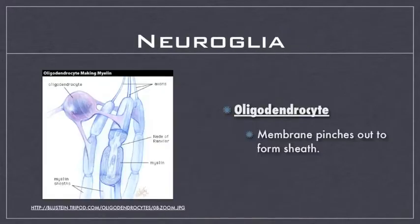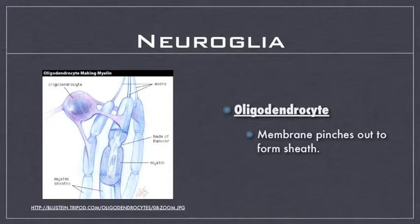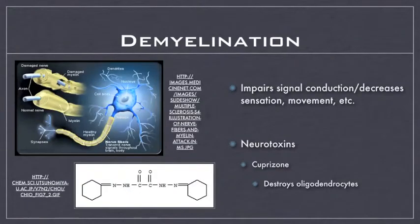In order to answer how these sheets are formed, I must introduce you to neuroglia. Neuroglia are specialized cells which help neurons, and there are several different types which assist different components of a neuron. For our purposes, we must focus on the oligodendrocyte, as it is the neuroglia responsible for the formation of the myelin sheath. Specifically, it does this by pinching out its membrane in order to form the myelin sheets around the axons.